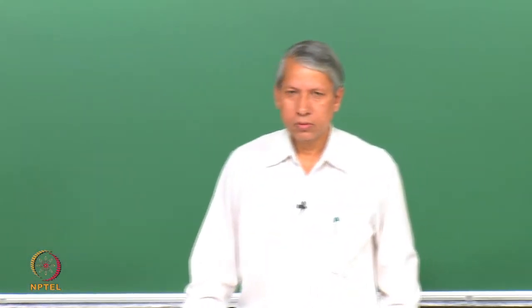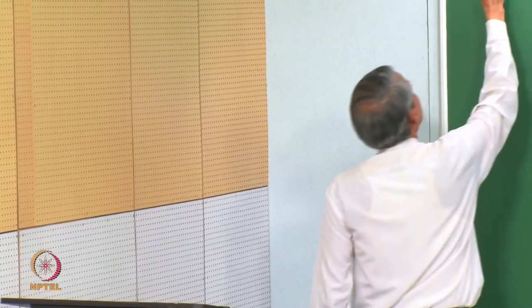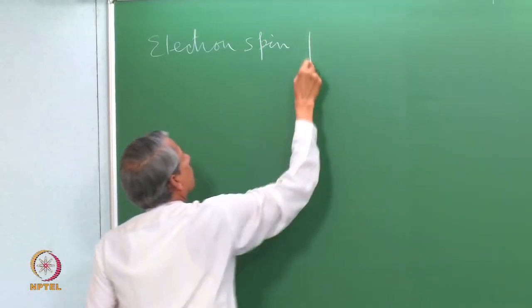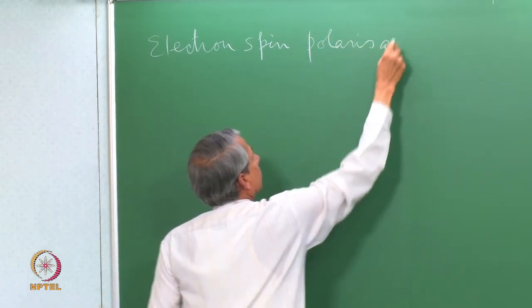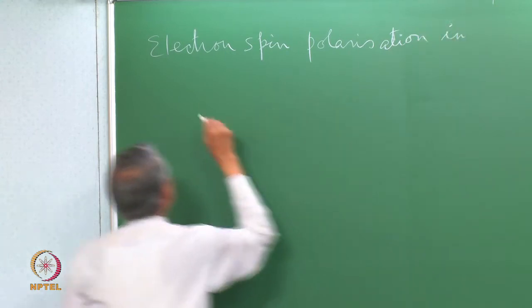Today, we are going to see how the EPR spectra recorded when the radicals are just created by a pulse laser light, and how they differ from the steady-state EPR spectra, and what can you learn about the mechanism of the radical production. The broad theme will be electron spin polarization in photochemical reaction.